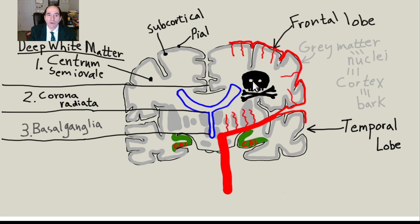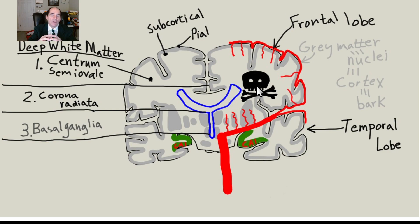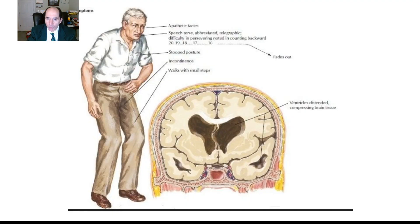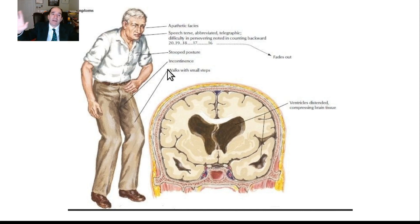Normal pressure hydrocephalus — NPH, communicating hydrocephalus — shows big cerebral ventricles. The mnemonic is wet, wobbly, and wacky: urinary incontinence, unsteady gait, and confusion or dementia. Frank Netter was the best anatomy artist in history. I strongly recommend Netter's Neuroscience Atlas for studying brain anatomy — it's the best book for that purpose. His illustrations are the best for learning brain anatomy.